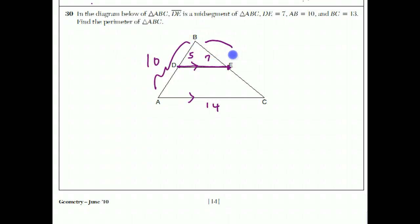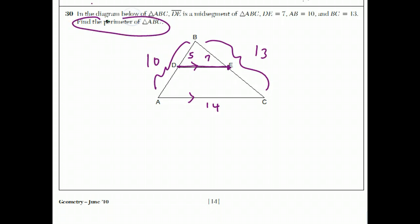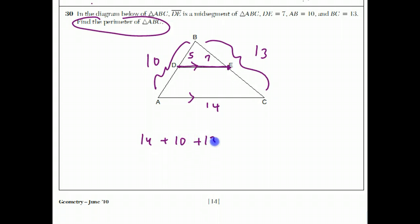If BC is 13, we have enough information for this question. The perimeter of ABC is 14 plus 10 plus 13, which is 37, which is the answer to that question.